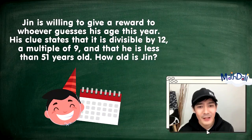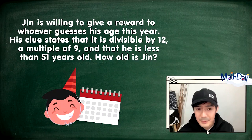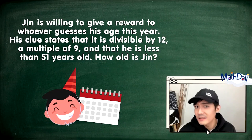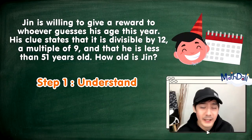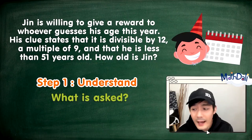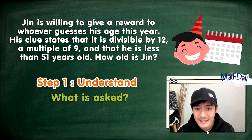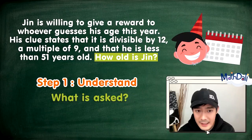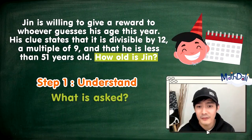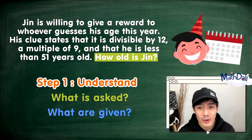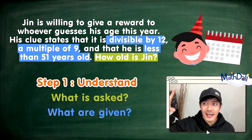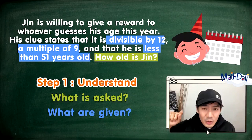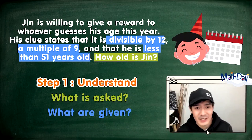Let's solve this by following the steps in solving word problems. First step: understand. Naintindihan natin na ang hinahanap sa problema ay ang edad ni Jin. At ang binigay namang detalye: divisible by 12, multiple of 9, and less than 51 years old. Ang dami nating limitations, kaya matutukoy natin kung ano nga ba yung exactong age niya.